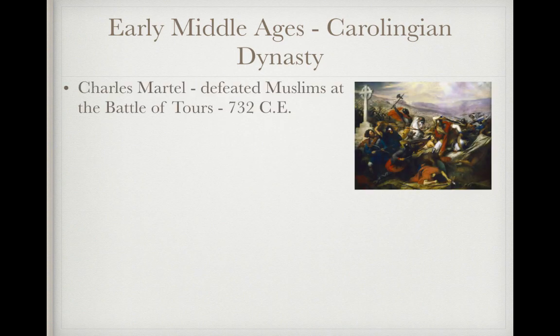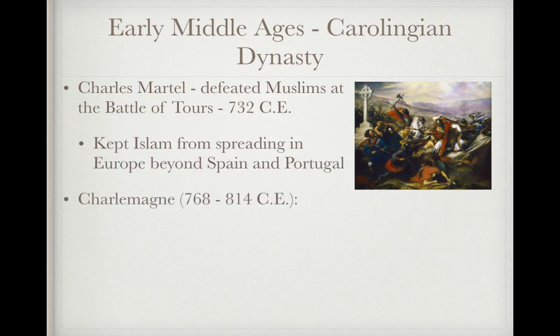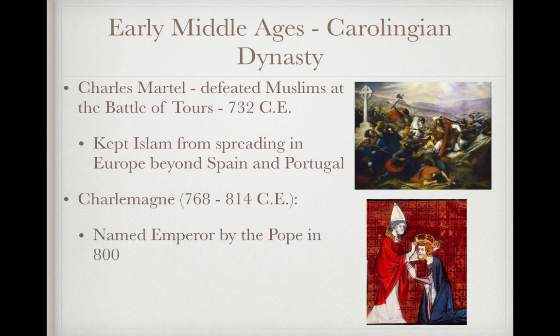Under the Carolingian dynasty, Charles Martel defeated the Muslims at the Battle of Tours in 732 CE. This kept Islam from spreading into Europe beyond Spain and is considered a major turning point in European history — which is why we don't see Islam spreading further into Europe.